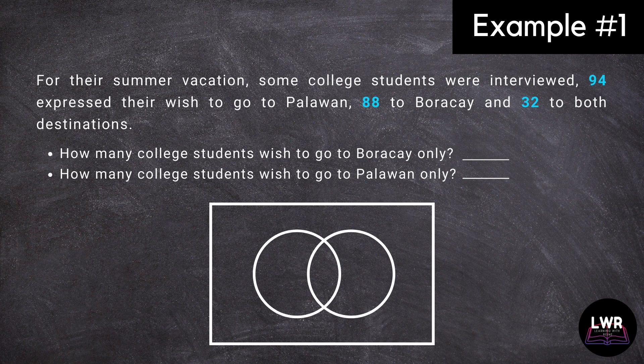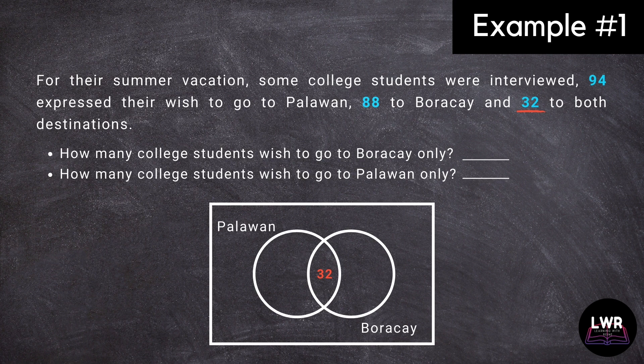In order to answer the given questions, let us have this illustration. We will name the circle at the left side to represent the data for Palawan, and the circle at the right side for Boracay. It is stated in the problem that 32 college students want to visit both Palawan and Boracay, so this number should be placed at the center where the two circles overlap, which means that 32 students want to go to both destinations.